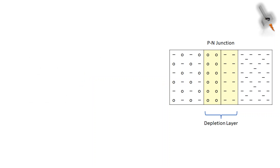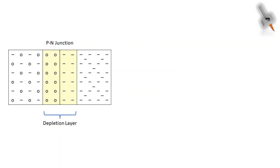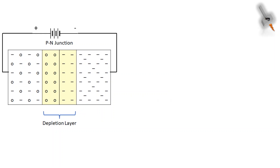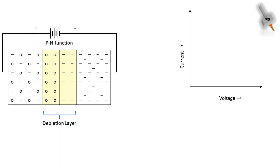Now let's see how a p-n junction behaves when an external field is applied. If we connect the positive terminal of a battery to the p-side and the negative terminal to the n-side of a p-n junction, until the applied voltage does not overcome the electric field of the junction, the charge flow is less. Once the electric field of the junction is overcome by the external applied voltage, current starts flowing.